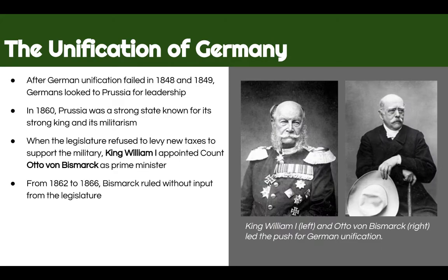Germany is also fragmented and split into lots of different regions. In 1848, Germany also sought unification but failed. So they start to look toward Prussia for leadership. Prussia was a dominant empire — a strong state known for its strong king and strong military. These states would turn to Prussia to try to unite the region.